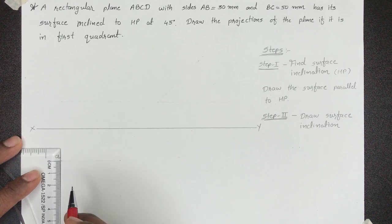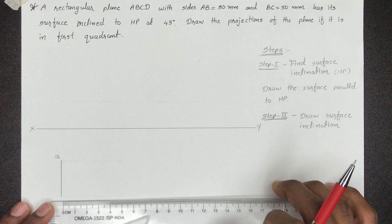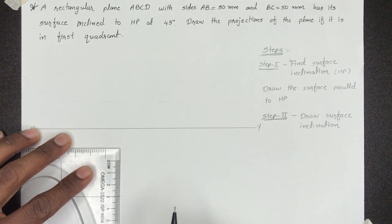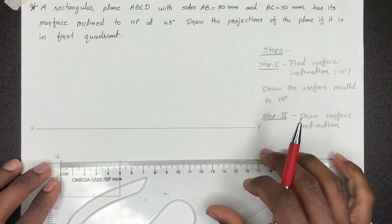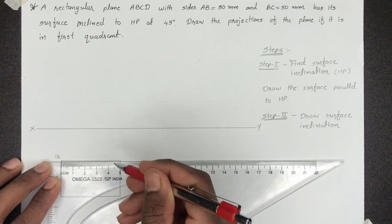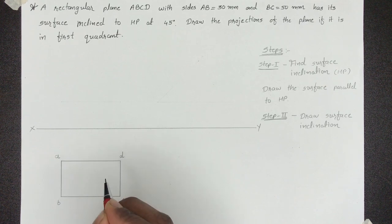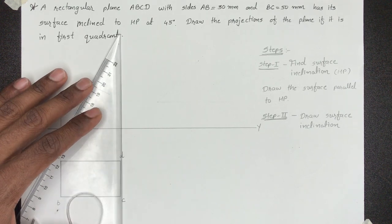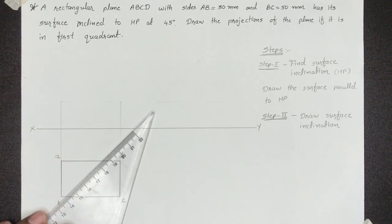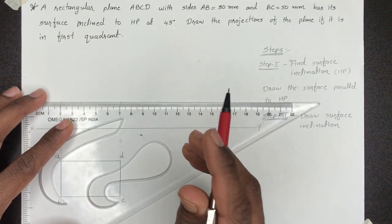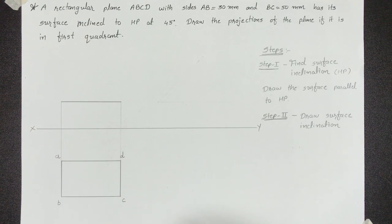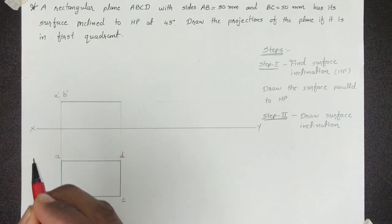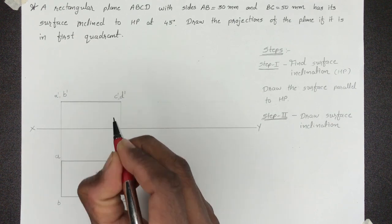Top view में हमें true shape मिलेगा, तो AB हम 30 mm का draw करेंगे और BC रखेंगे 50 mm. सबसे पहले हमें true shape draw करना है जो हमें top view से मिलेगा. Front view draw करने के लिए top view से हम projectors extend करेंगे. Front view में कोई भी height पे आप horizontal line draw कर सकते हो क्योंकि distance provided नहीं है. यहाँ पे हमें 2 points मिलेंगे A' और B', और यहाँ पे C' और D' points मिलेंगे.